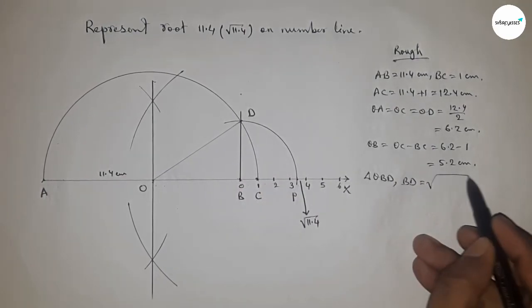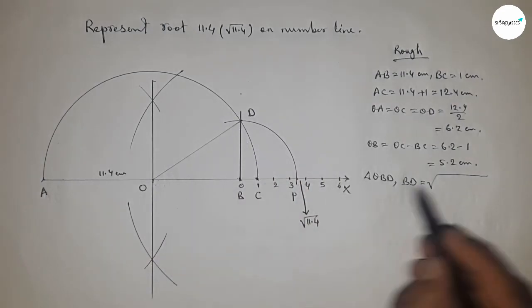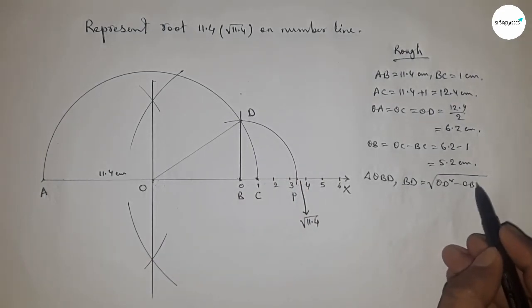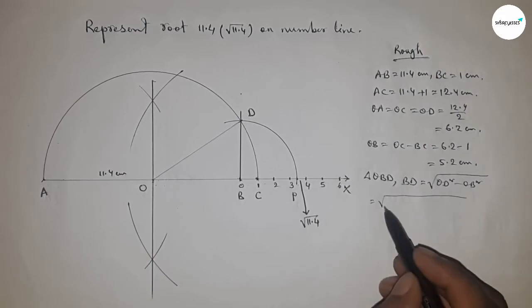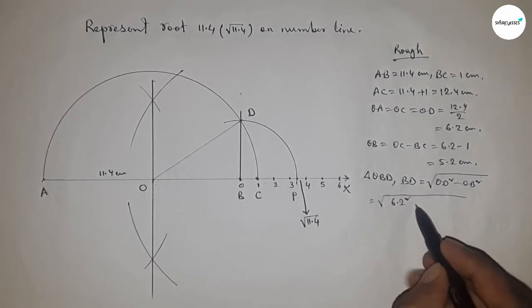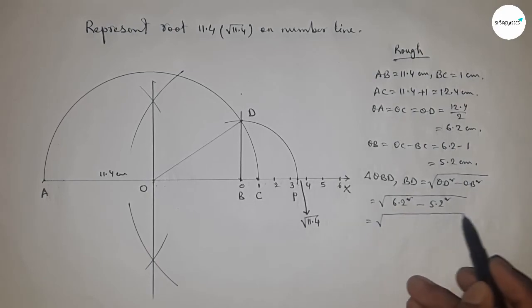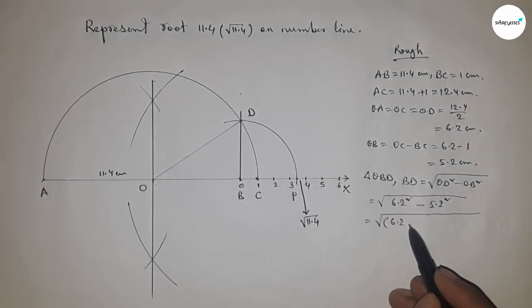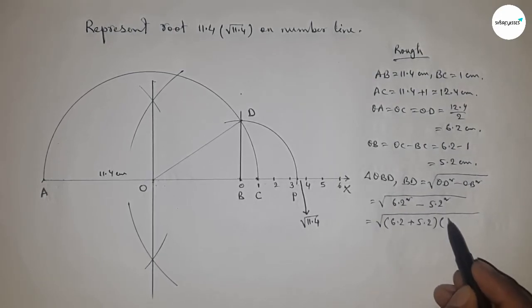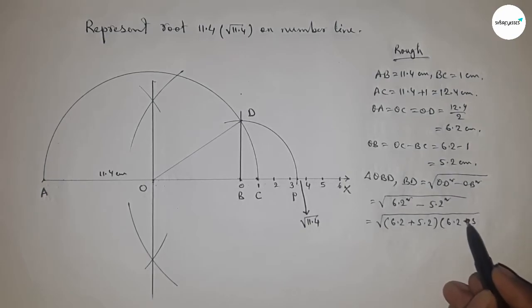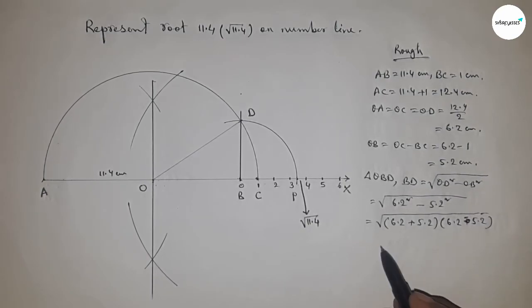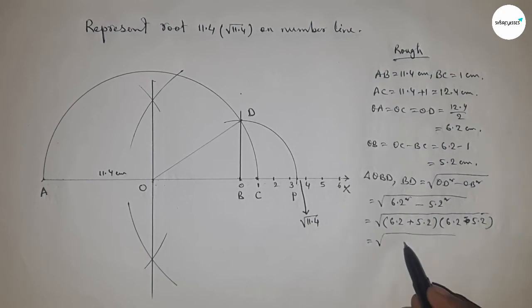From right angle triangle OBD, we can write BD = by Pythagoras theorem, √(OD² - OB²). Putting the values of OD and OB, using the formula a² - b² = (a+b)(a-b), and applying the formula, this equals √(11.4 × 1) = √11.4 centimeter.